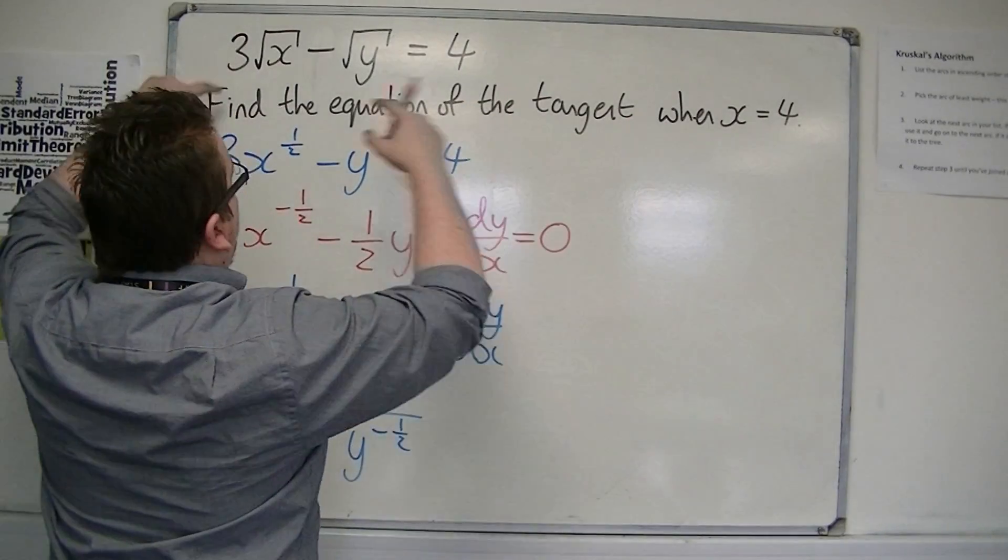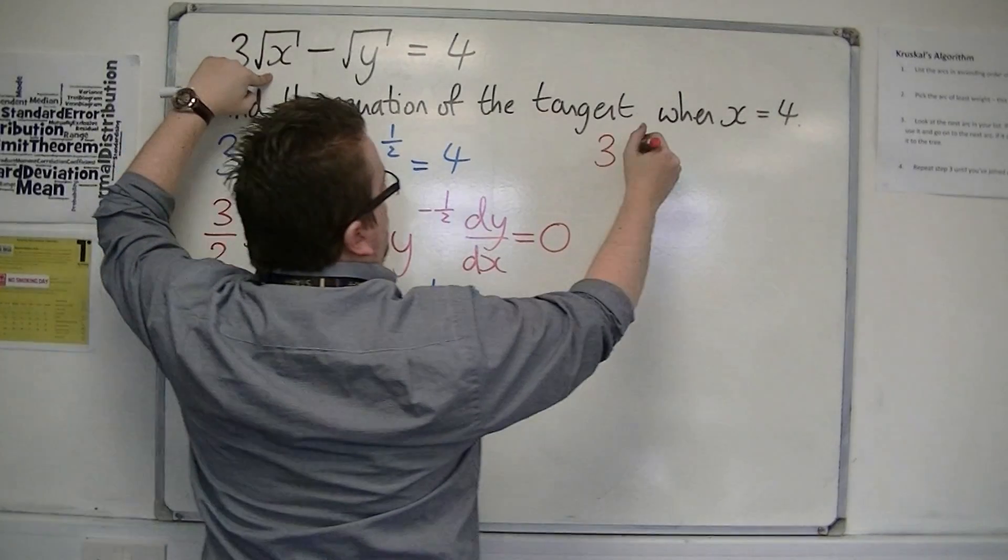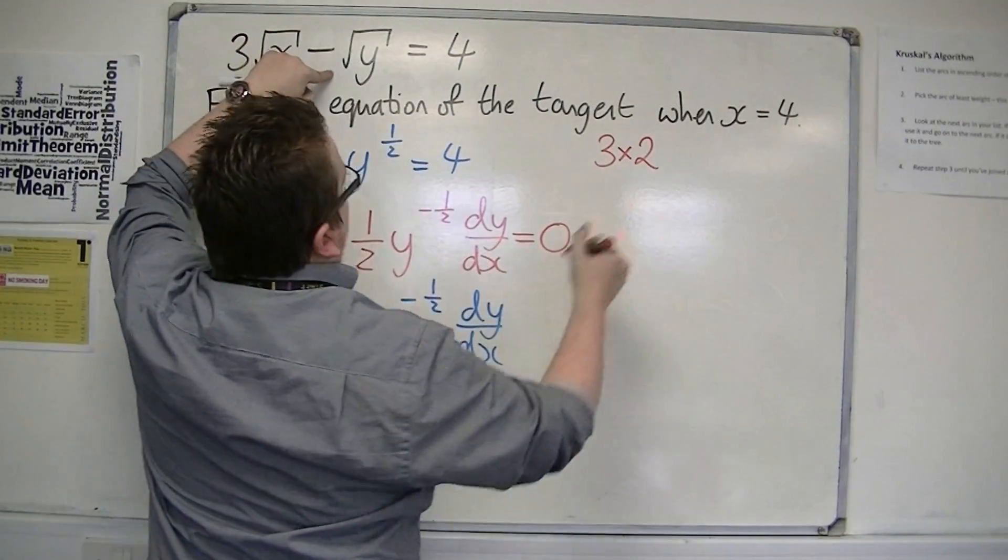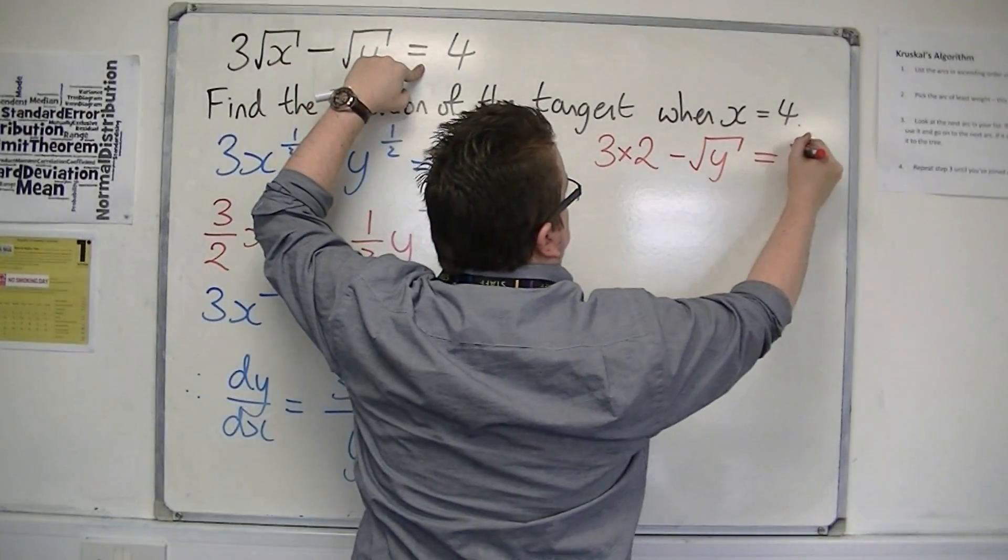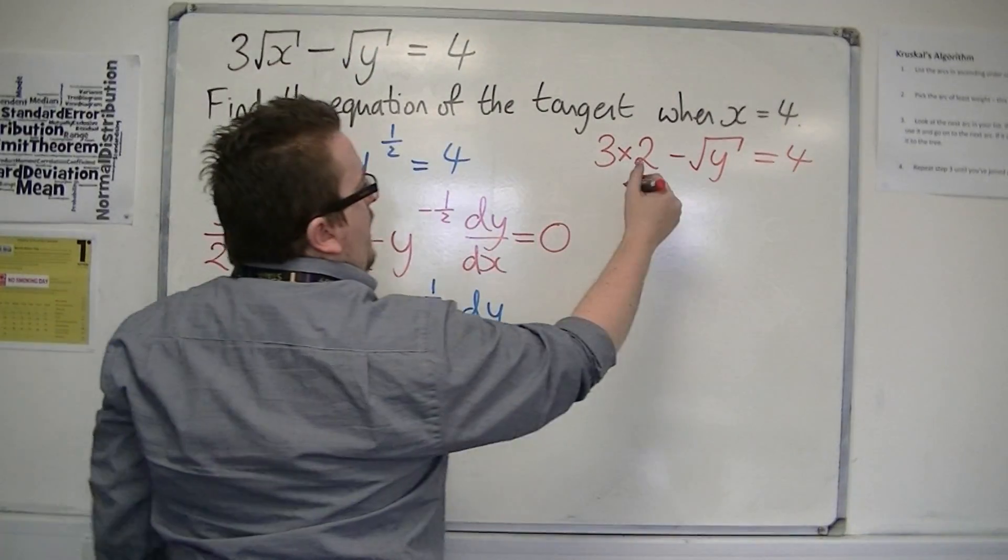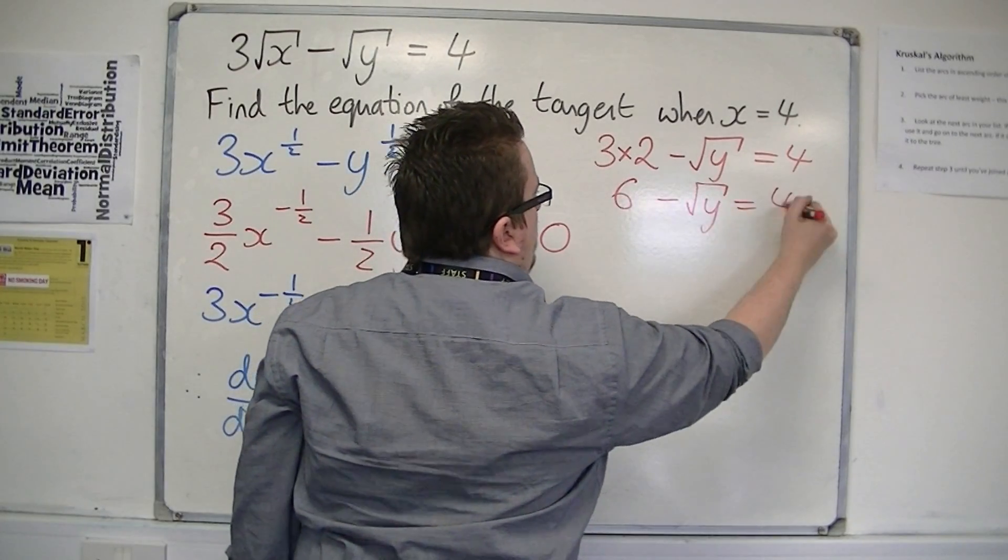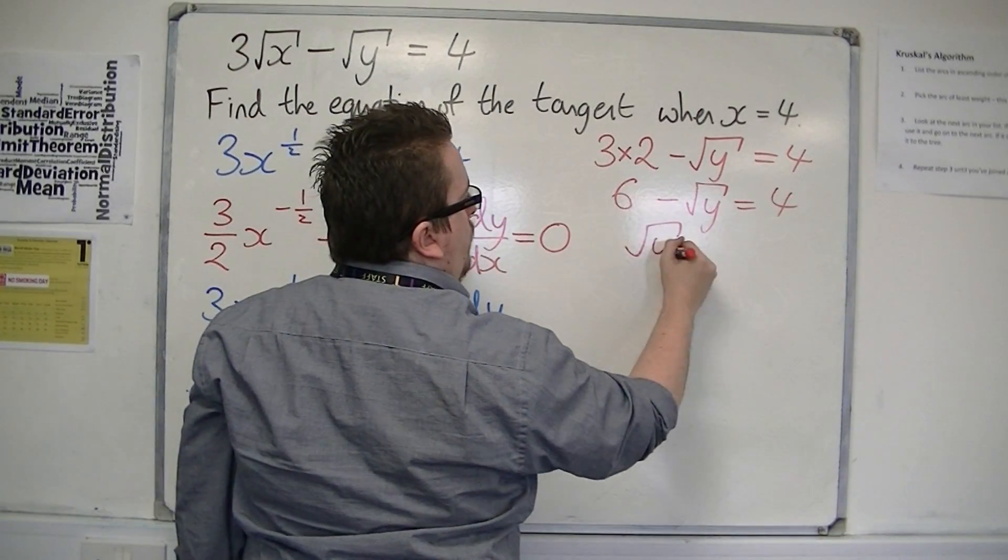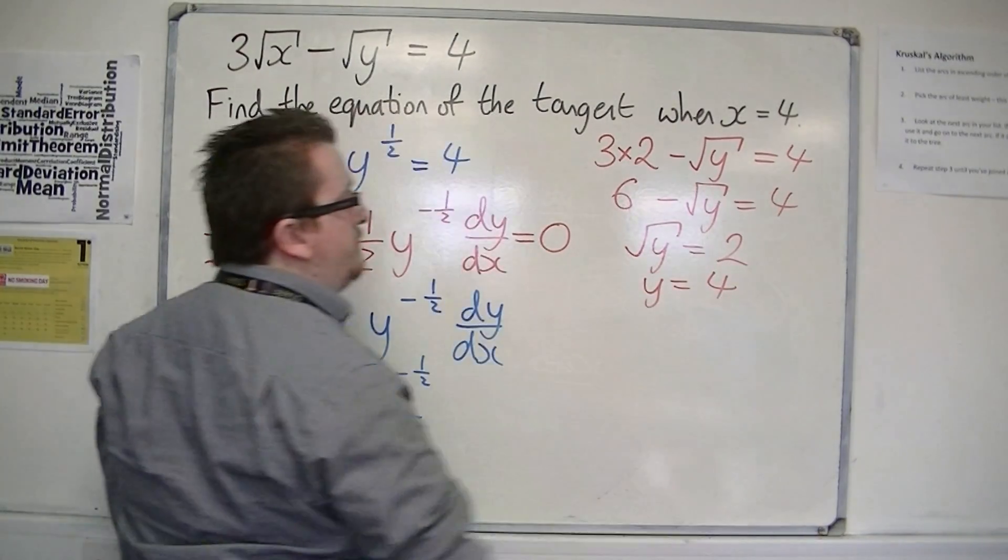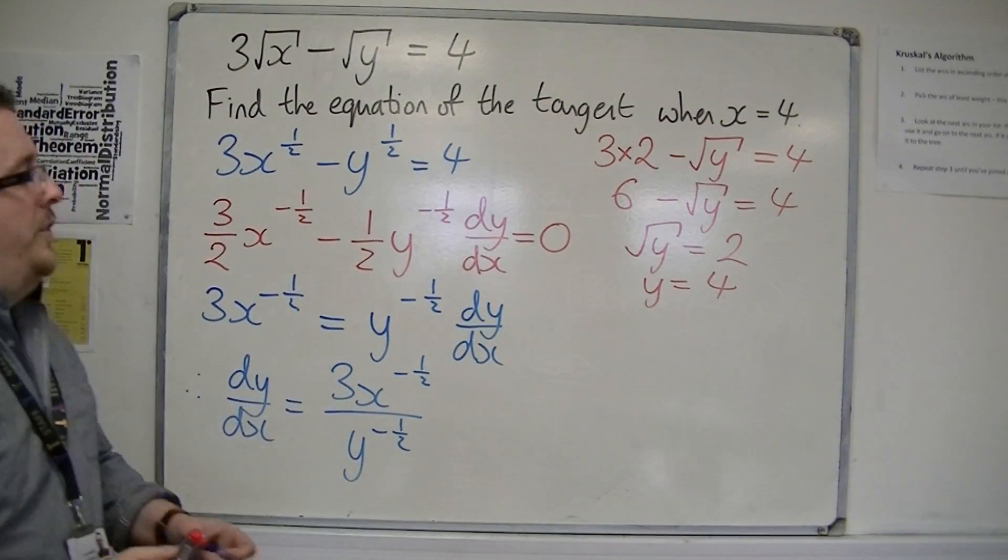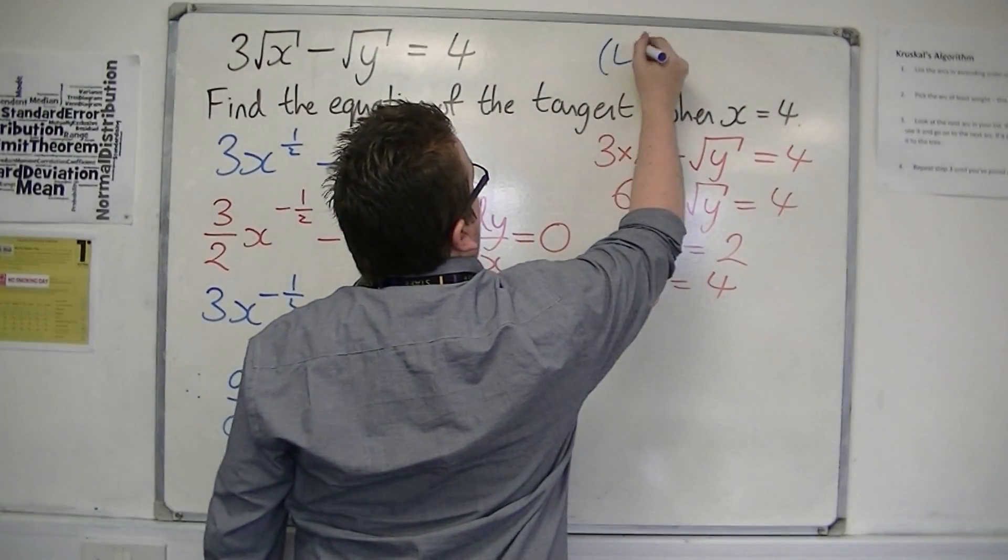So putting 4 into this, I have 3 lots of root 4, which is 2, take away root y is equal to 4. So I have 6, take away root y equals 4. So that means that the root y is equal to 2, so y must be equal to 4. So the actual coordinates of the point on the curve is 4, 4.